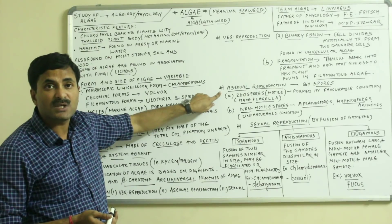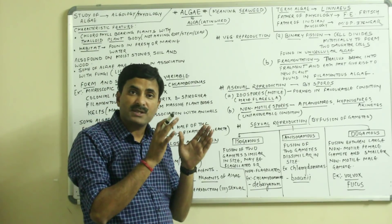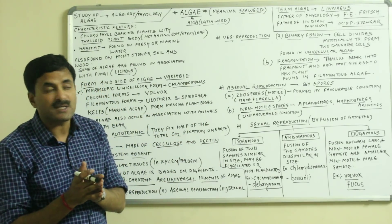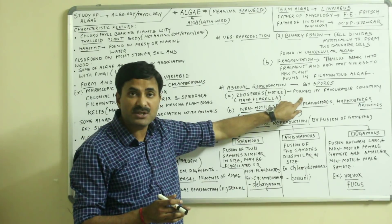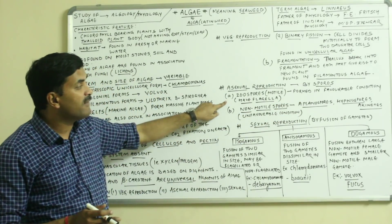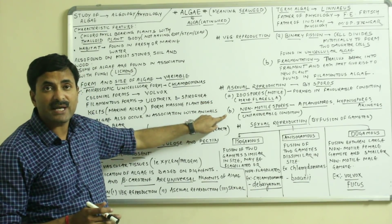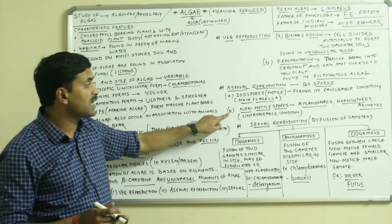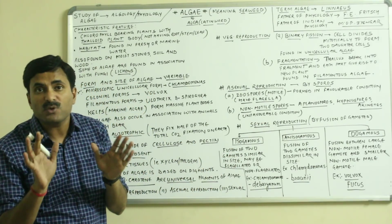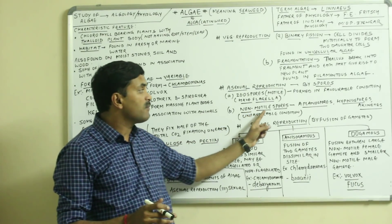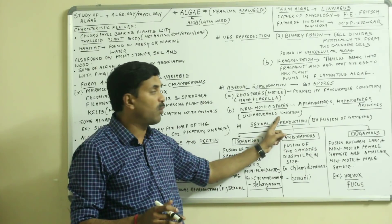Asexual reproduction in algae occurs with the help of spores. Spores may be of two types: motile spores (called zoo spores) and non-motile spores. Zoo spores are motile because they have flagella and are formed in favorable conditions. Non-motile spores are formed under unfavorable conditions and they have a thick wall around them — unlike zoo spores which have no wall. Examples of non-motile spores include aplanospores, hypnospores, and akinetes.